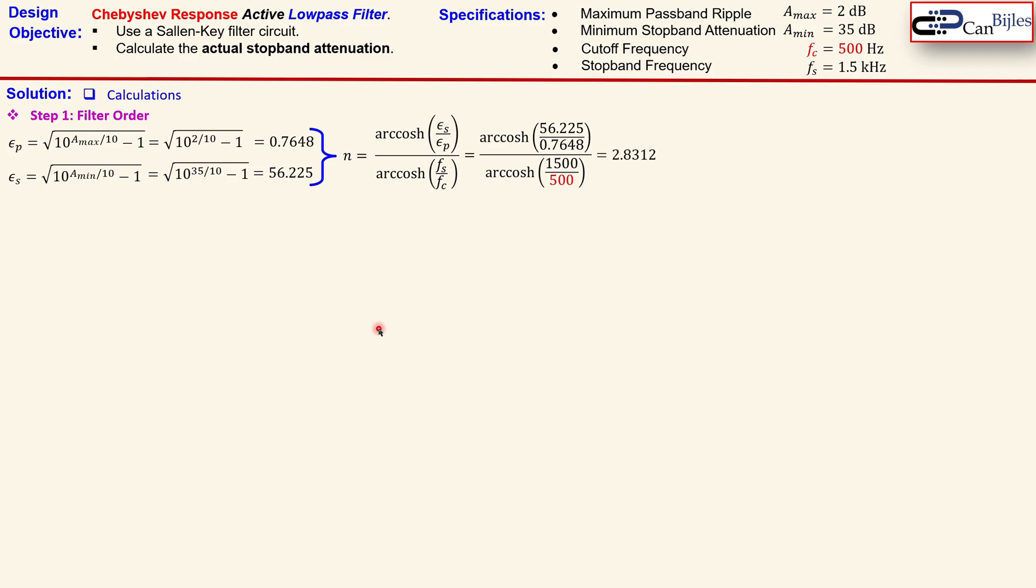And you get here 2.831 approximately. Now this is of course what we get exactly or in an approximate form. But we need to have an integer value in order to realize our circuit. So we need to go for an N=3. So we need a third order filter circuit.